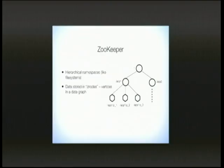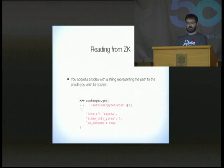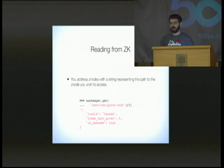At its root, ZooKeeper is a tree of nodes, sort of like a file system. Data are stored in what they call Z nodes, or just the vertices in the graph. To read from ZooKeeper, you address Z nodes with a string representing the path to the node you wish to access, just like a file system. You call ZooKeeper.get with the path to your node, and it returns a two-tuple. We're getting the data back, which is just raw data — in this case, a string.